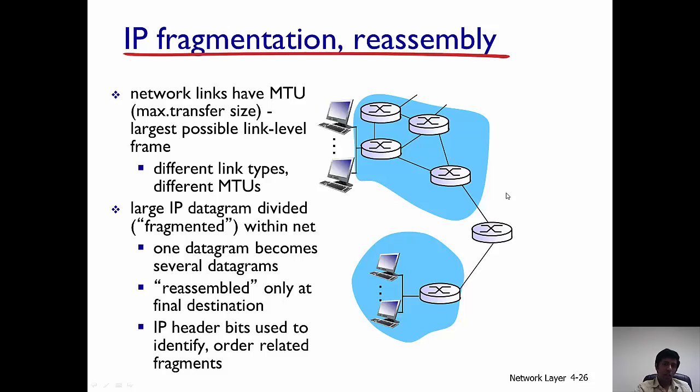IP datagrams can be larger than the MTU or the largest possible link layer frame that can be sent, and link layer technologies can vary across networks. So what happens when a large IP datagram arrives in a particular local network which is much larger than the MTU?